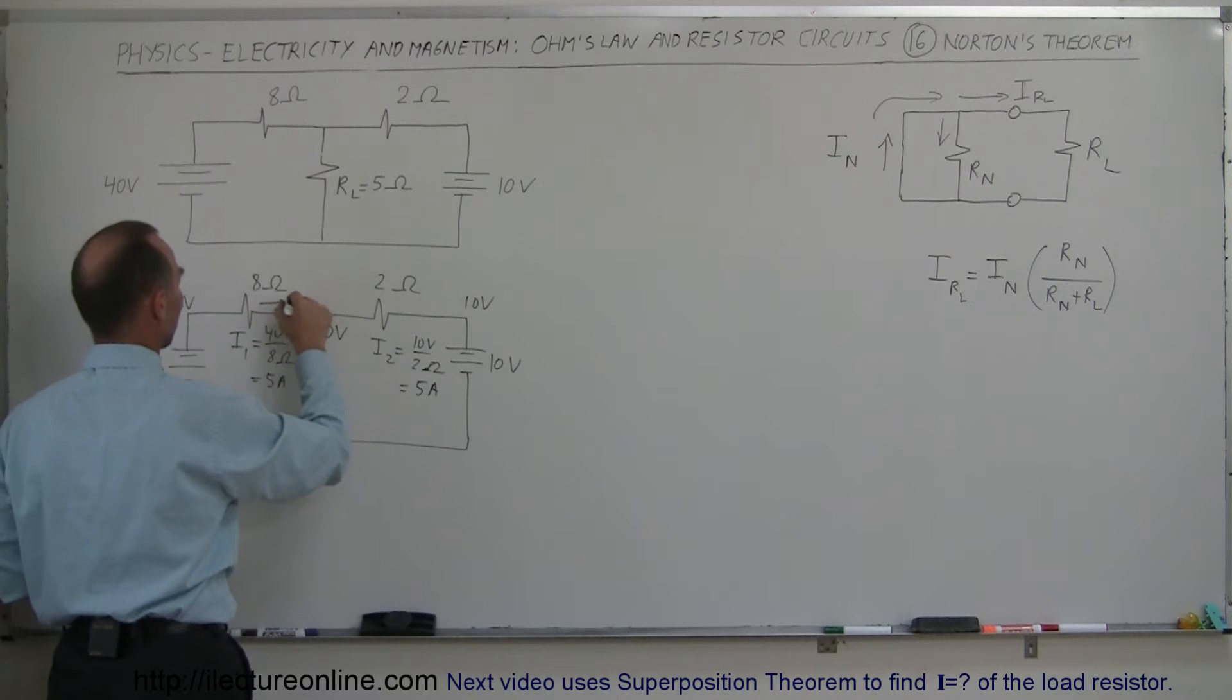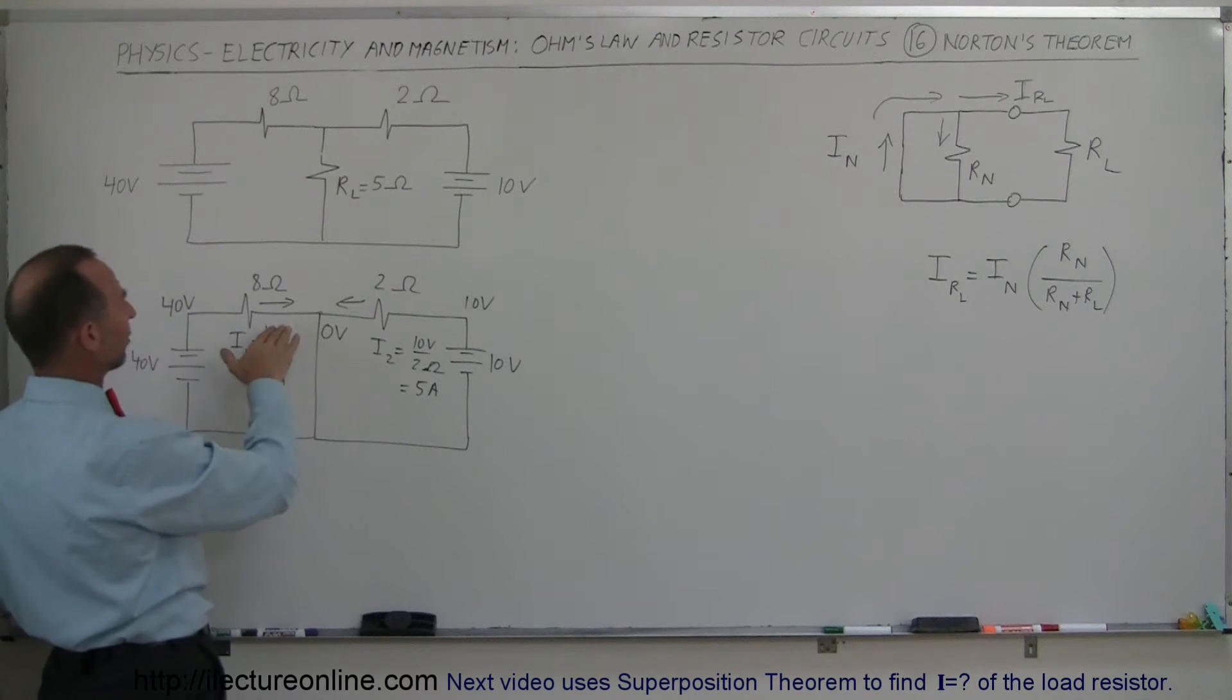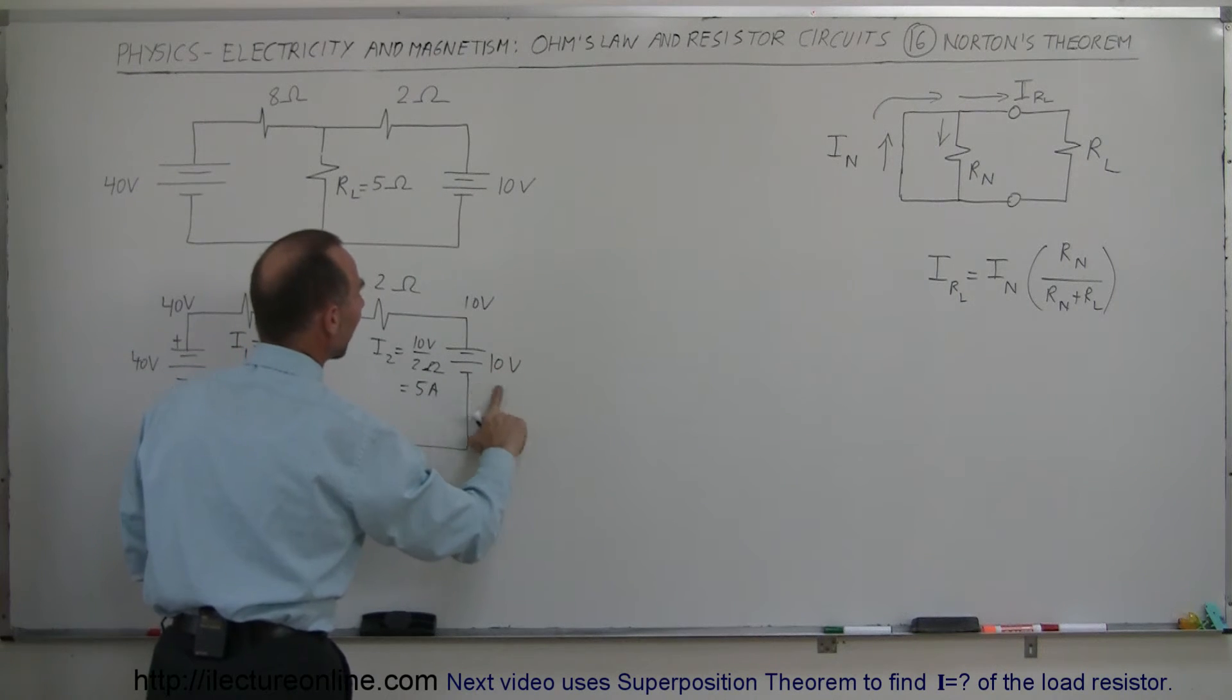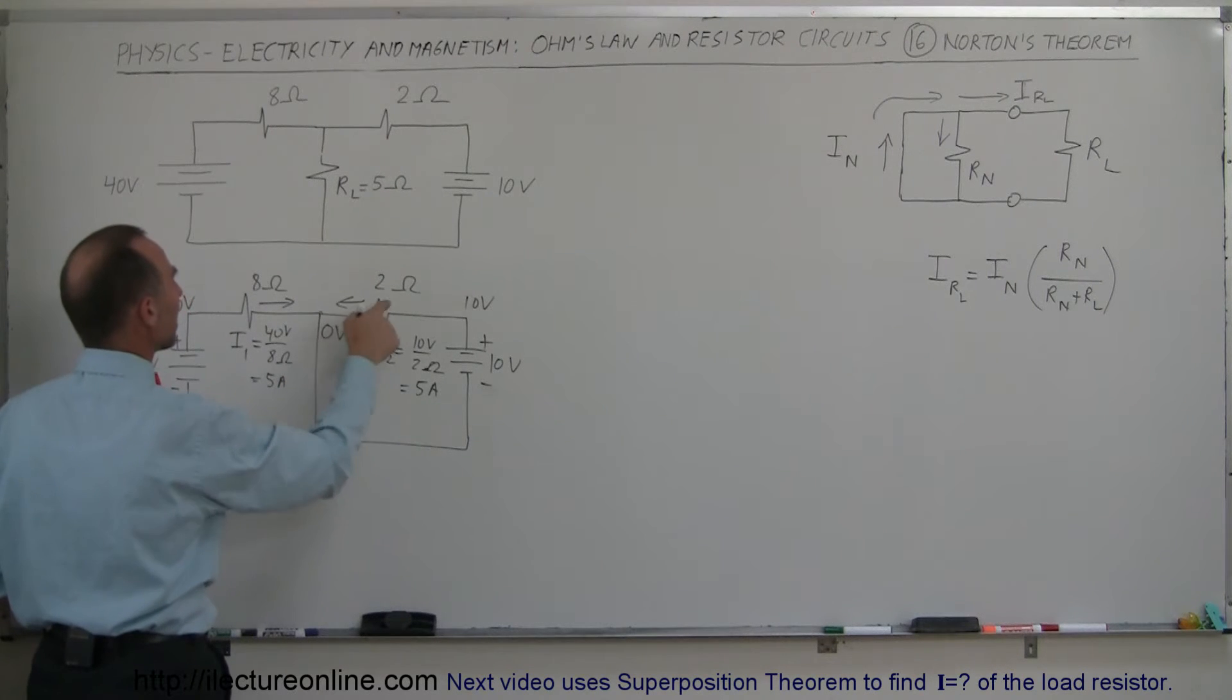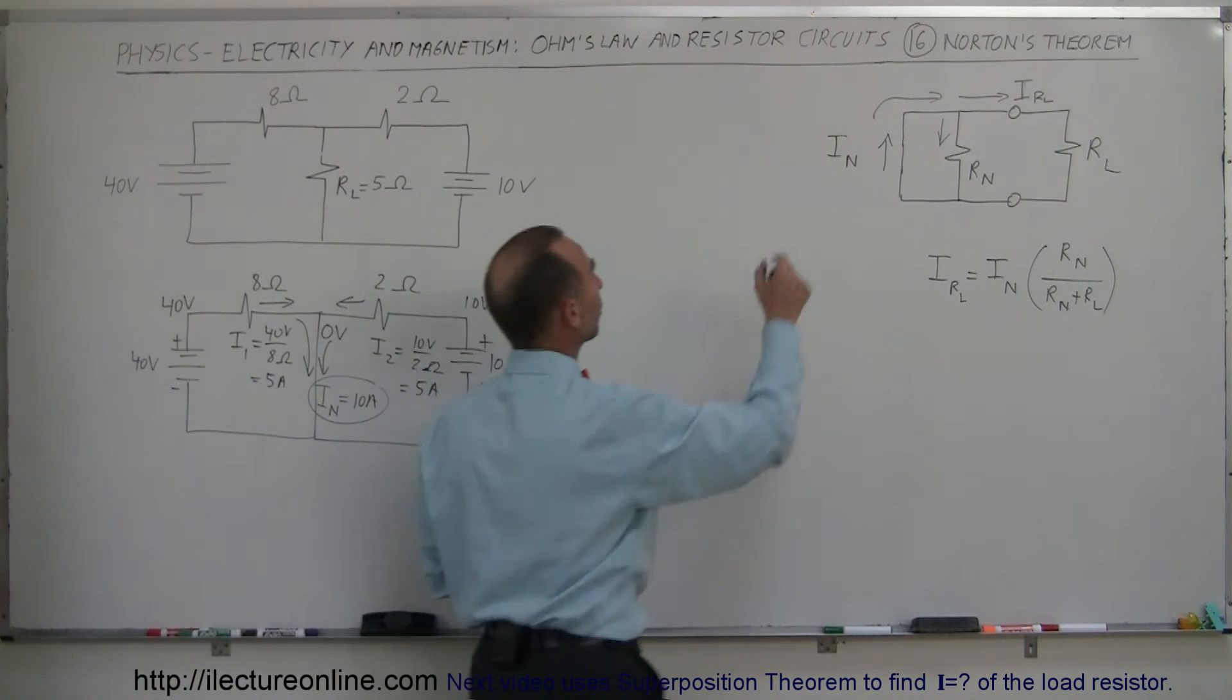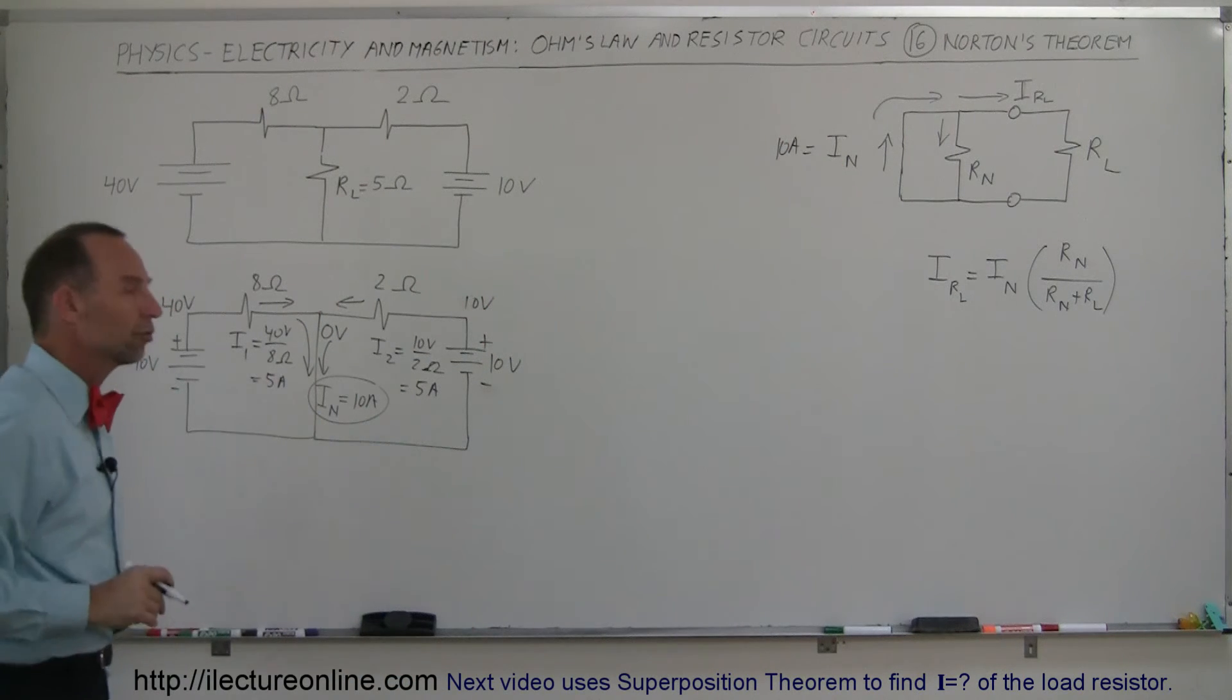And so both of those currents will be directed this way. And yes, I know, if you're an engineer, you're going to say, wait a minute, it's got the current in the wrong direction, because current flows from negative to positive. Well, in physics classes, current flows from positive to negative, so it depends what class you're sitting in. So this will be 5 amps and 5 amps, so when the current comes together in the single Norton branch, I Norton will be the sum of those two, or 10 amps. This is equal to 10 amps found by shorting out the load resistor.